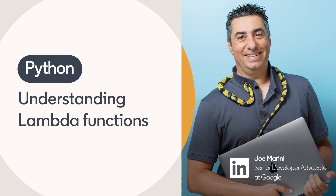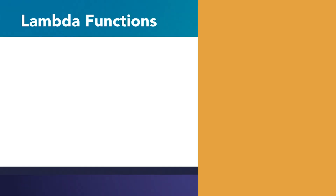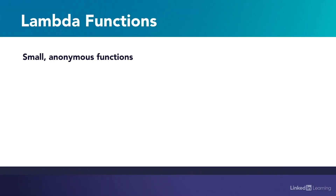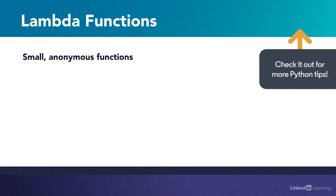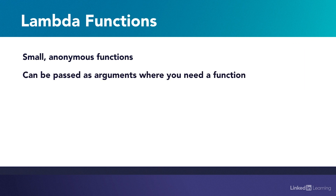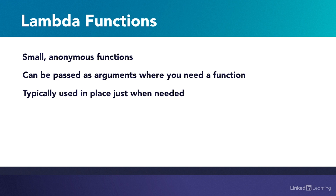If you've done any programming in other languages, such as JavaScript, C#, or Java, you've probably seen or worked with anonymous functions. Python also supports these, and they are referred to as Lambda functions. Lambda functions can be passed as arguments to other functions to perform some processing work, much like a callback function in JavaScript. Typically, you see these used in situations where defining a whole separate function would needlessly increase the complexity of the code and reduce readability.